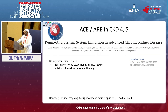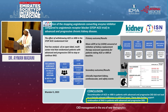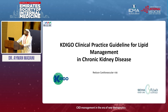What about ACE inhibitors and ARBs in CKD stage 4 or 5? The STOP-RAS study — renin-angiotensin system inhibition in advanced chronic kidney disease — concluded that stopping RAS inhibition leads to higher mortality with no benefit in improving eGFR. A post-hoc analysis also concluded that RAS inhibition in patients with advanced and progressive kidney disease is better continued than stopped unnecessarily.